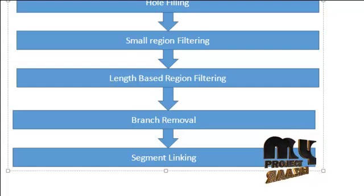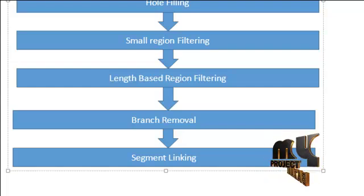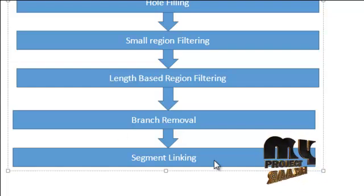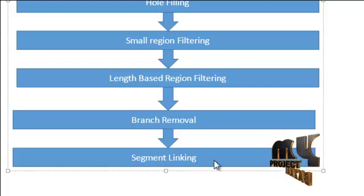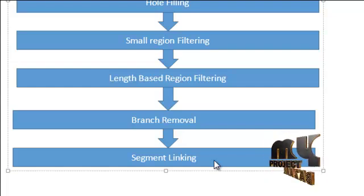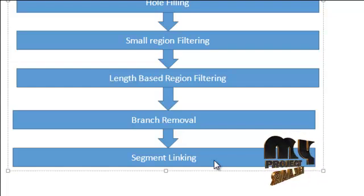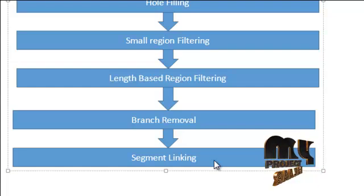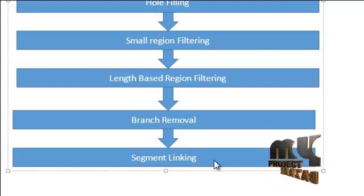Finally, we go for road segment linking. Two segments to be merged are identified. We locate the pixels that need to be mapped to road pixels. Since road structures are regions, the linked portion will also be a region.